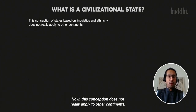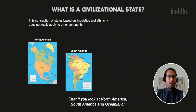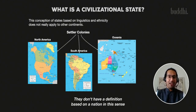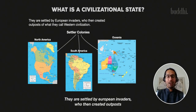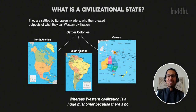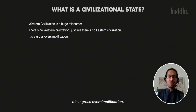This conception does not really apply to other continents. If you look at North America, South America, and Oceania — Australia, New Zealand — these are all settler colonies. They don't have a definition based on a nation in the ethno-linguistic sense. They were settled by European invaders who created outposts of what they call Western civilization. But Western civilization is a huge misnomer, because there's no Western civilization, just like there's no Eastern civilization. It's a gross oversimplification.